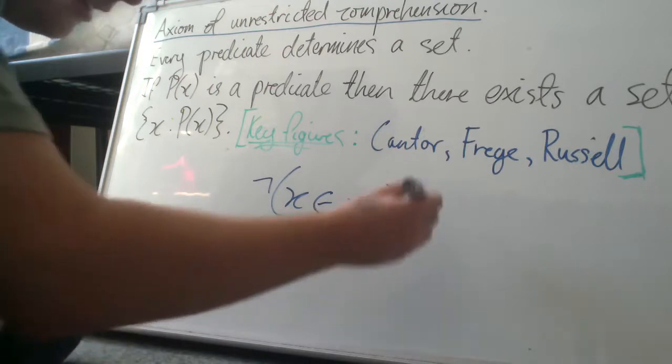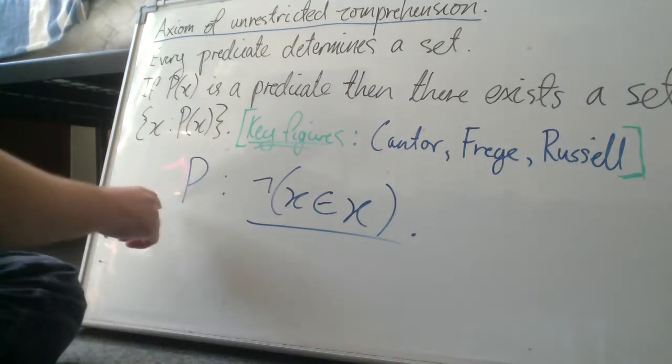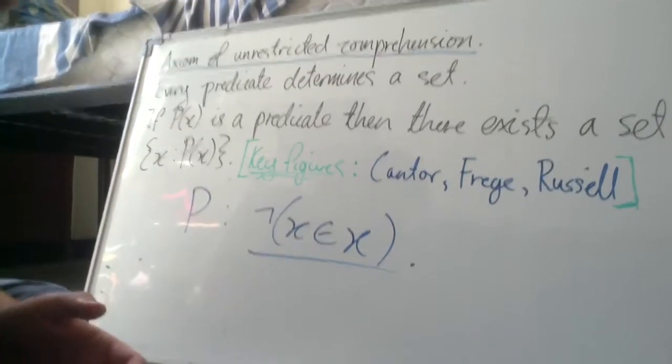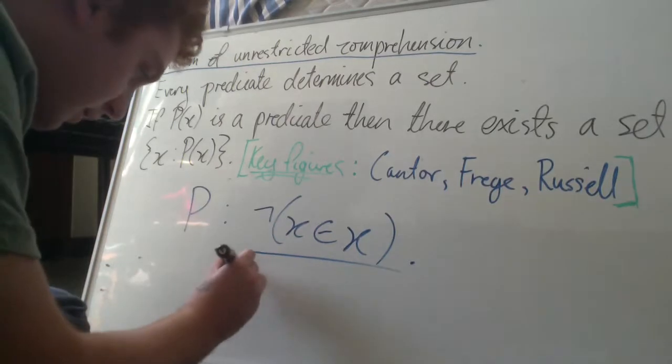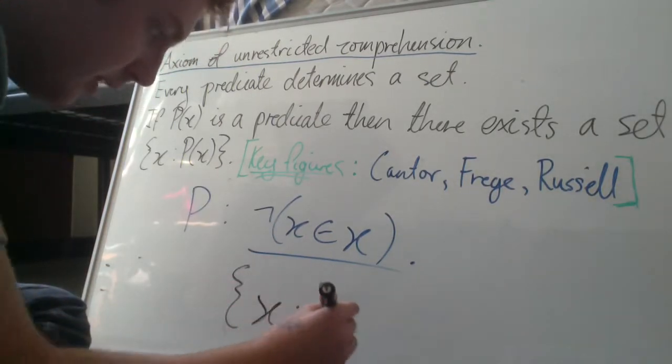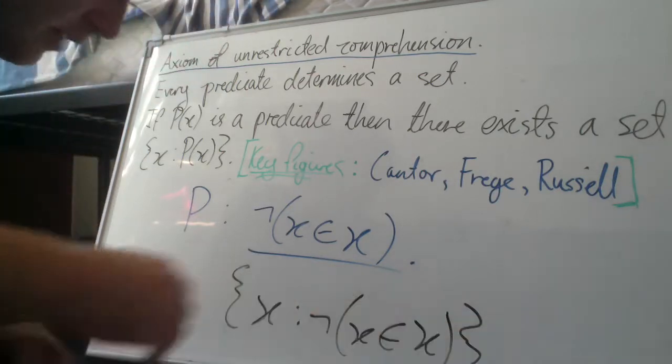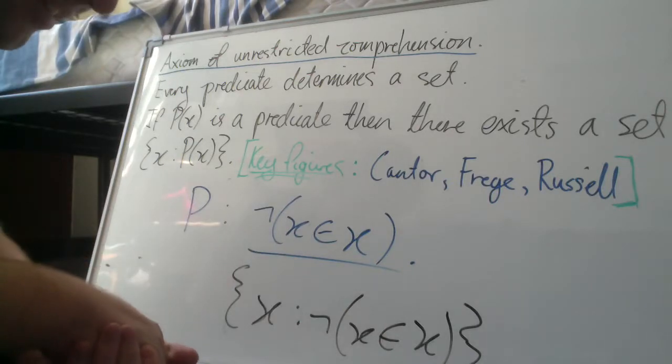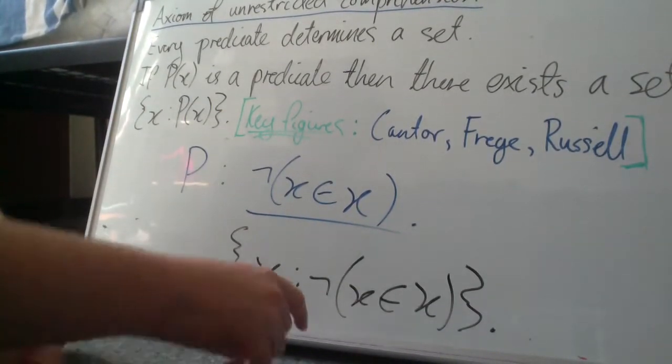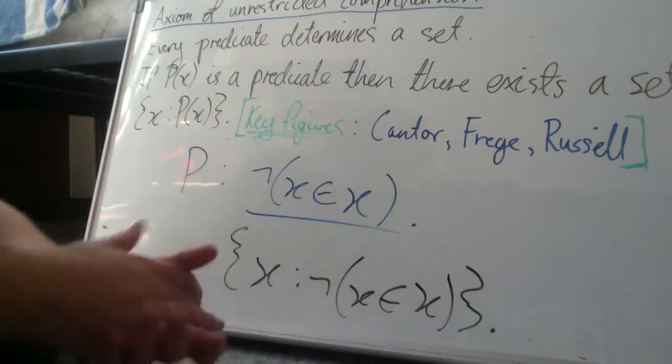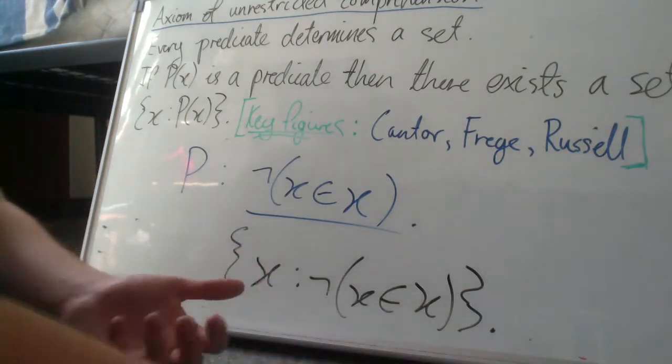So this we're going to call P. So now by the axiom of unrestricted comprehension, we deduce that there is a set of all x such that x is not an element of x. This is a bit strange when you first encounter it, but I think it makes a lot of sense that you would start negating the only relation you've started with. So now we've got this set. Let's call that set R.